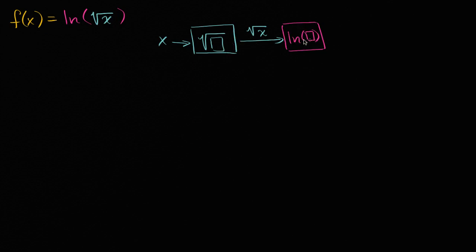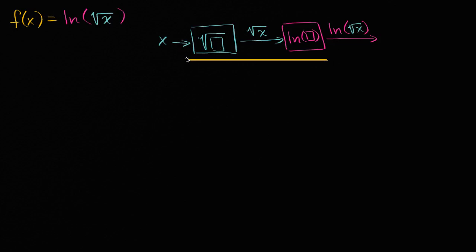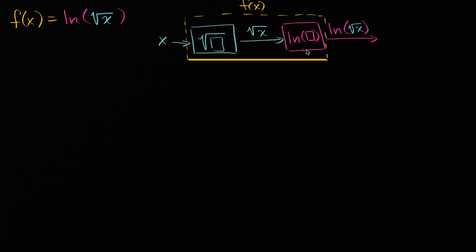I'm making these little squares to show what you do with the input. And then what do you produce? You produce the natural log of the square root of x — ln(√x) — which is equal to f(x). So you could view f(x) as this entire combination of functions, which is essentially a composition of two functions: you're inputting into one function, then taking that output and inputting it into another.